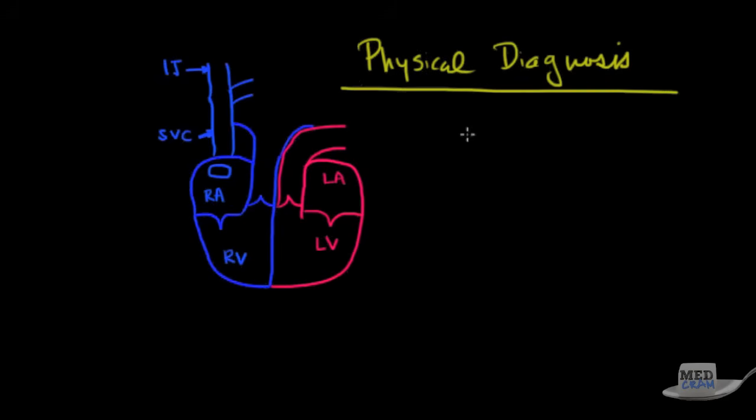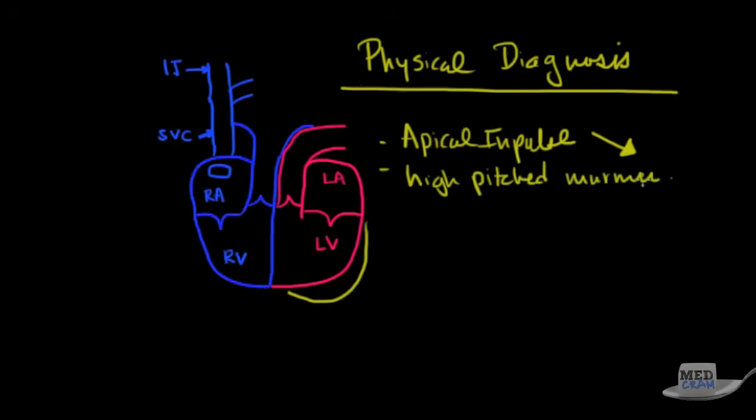Let's talk about physical diagnosis. What you'll see is because this is getting larger, you'll see the apical impulse is going to be displaced downward and to the left. And then the actual diastolic murmur is going to be a high-pitched murmur heard at the left sternal border. And it's going to actually be heard quite well if you have the patient lean forward. So if they're sitting on a table, have them lean forward and then place the stethoscope there. That'll bring that murmur closer to the chest wall and you'll be able to hear it much better.